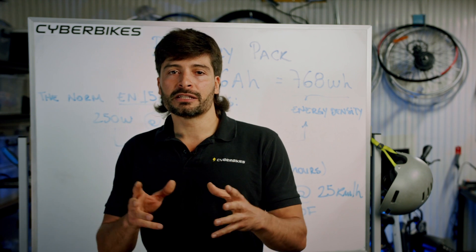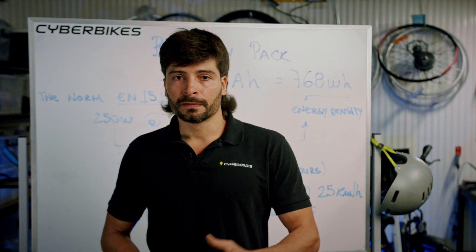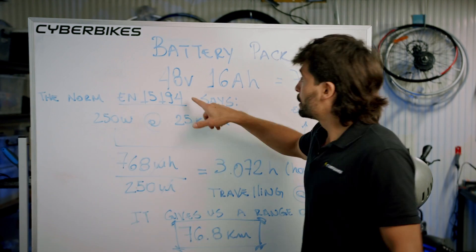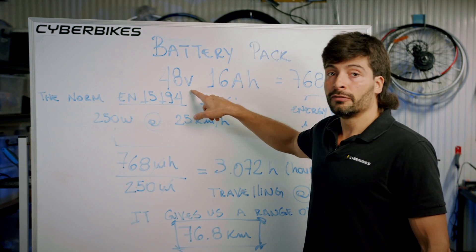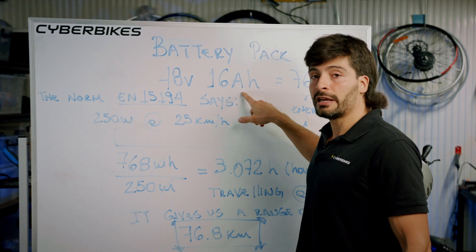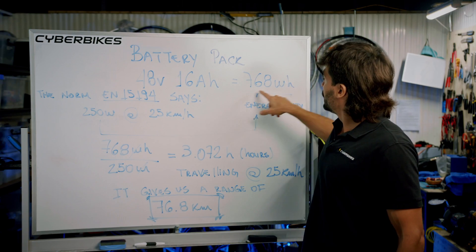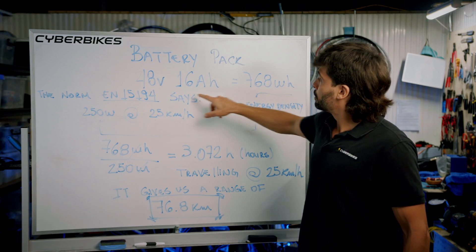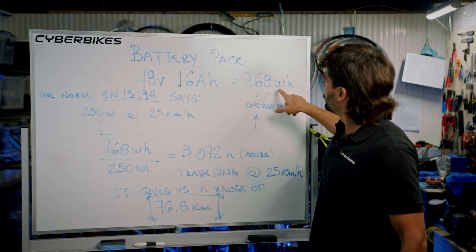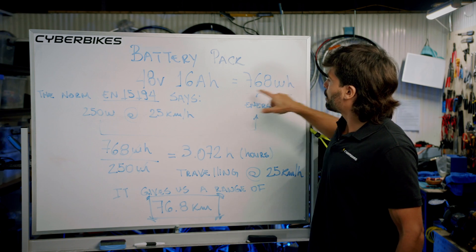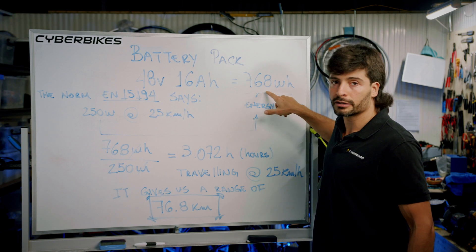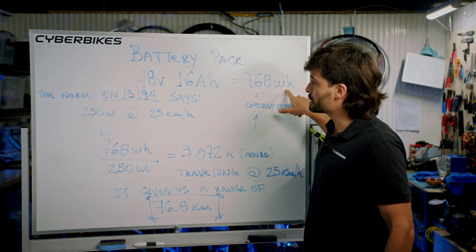It always starts with a very simple formula: battery energy density. We have 48 volts and a 16 amp-hour pack. If you multiply voltage times amp-hours, you get watt-hours — so 768 watt-hours of energy.